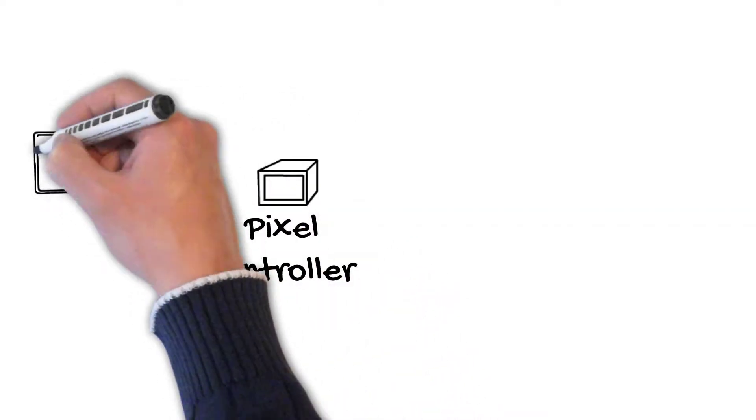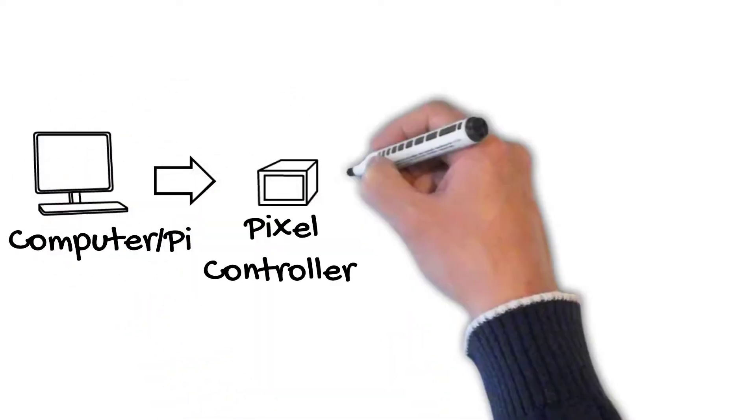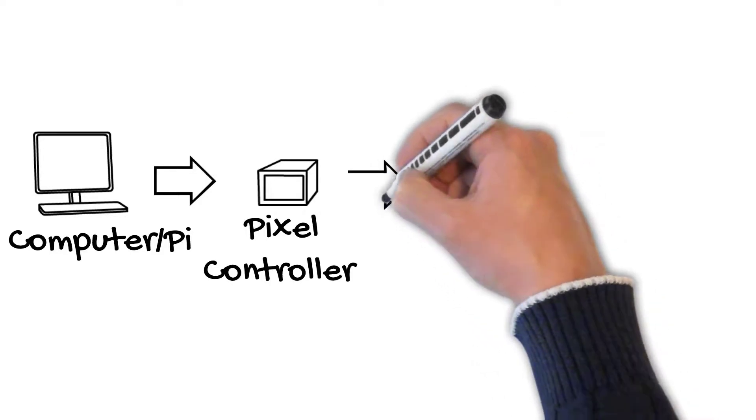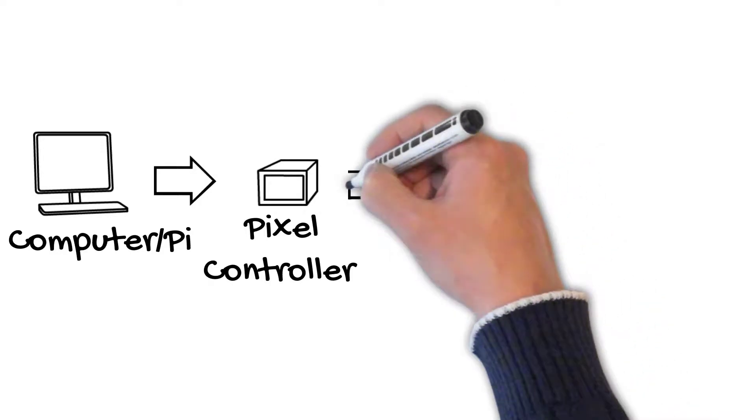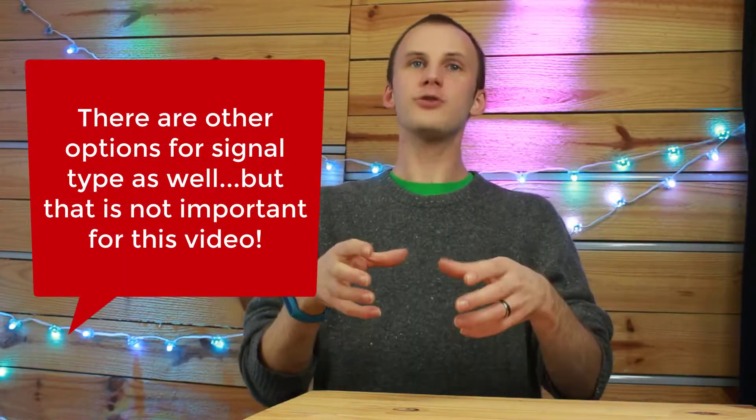It sends that data - those individual channels of red, green, and blue for each pixel - over E131, or SACN as it's called. Don't worry about the technical jargon right now. Your computer sends it to your controller, at which point your controller turns that data into information that these pixels can use.